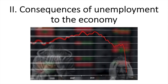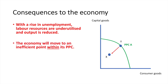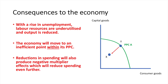Taking a broader perspective, let's consider the impact to the economy. With a rise in unemployment, labour resources are underutilized and output is reduced. The economy will move to an inefficient point within its PPC, shown in the diagram by the movement from point Y to point X. The maximum combination of consumer and capital goods will reduce, resulting in lower living standards. Reductions in spending will also produce negative multiplier effects, which will reduce spending even further.